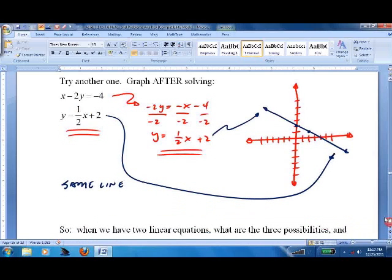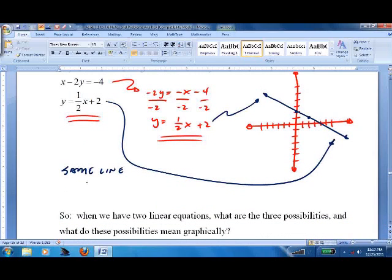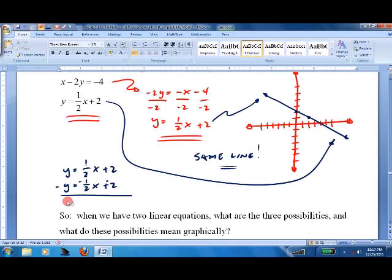Now, if we were to solve these, we get y equals 1 half x plus 2, and then the other equation was y equals 1 half x plus 2. I'll just put negative on this one, add down, I get 0 equals 0. So that's the point I made before. If you have something equals the same thing, we know we have infinitely many solutions.